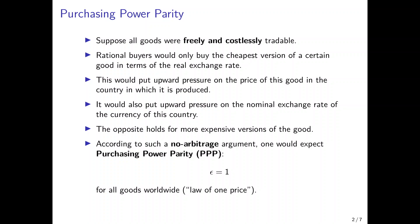The opposite would hold true for countries that produce more expensive versions of this good. If there is another country, say Canada, and they could only produce bikes that are much more expensive, then there would be no demand for these bikes and the price would fall. If there is a lot of trade in this good, also the currency of Canada would fall. This would make bikes produced in Canada much cheaper at the global level, while bikes in the Netherlands would become more expensive worldwide.